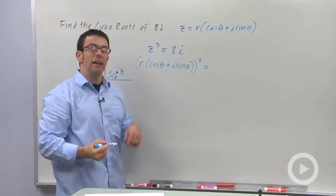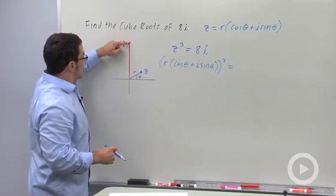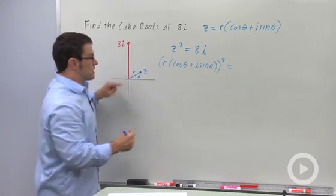And I also want to write 8i in trig form. It's actually pretty easy because 8i, the point is 8 units away from the origin, so the modulus is 8.